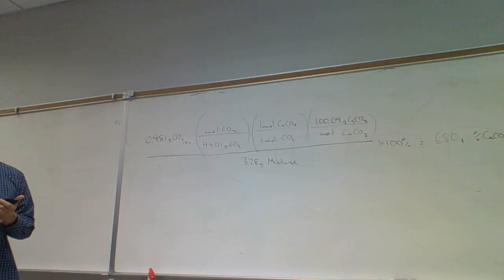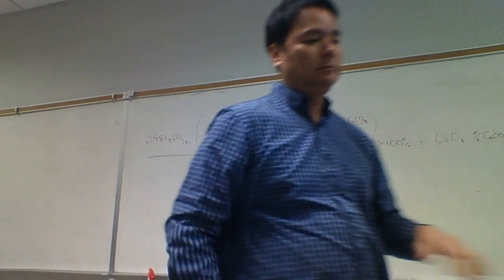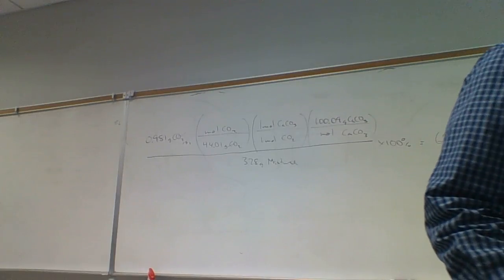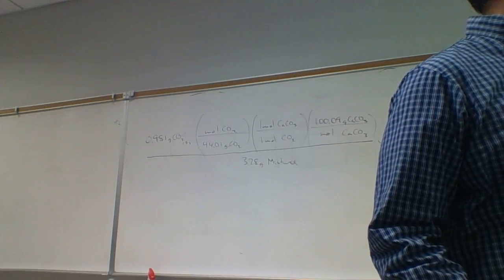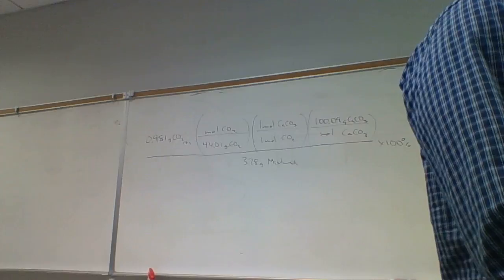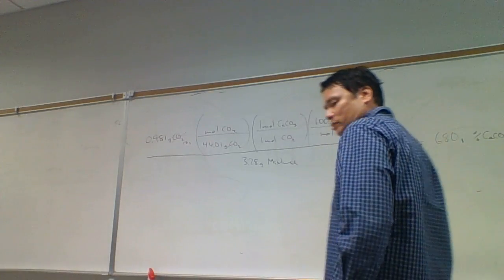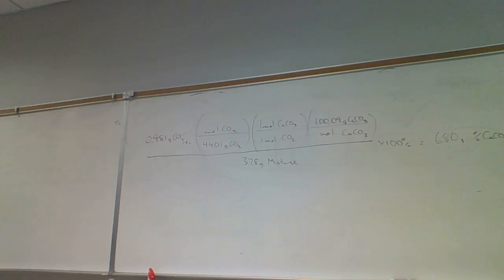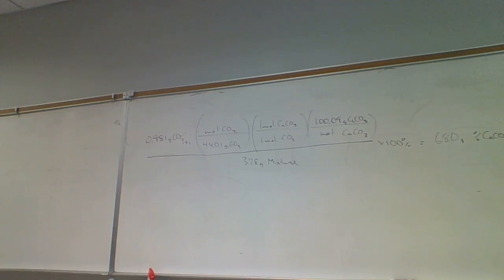Some stoichiometry problems involve solutions, so we need the composition of that solution — molarity. Molarity is most convenient because it goes straight from volume, which is easy to measure, to moles of pure reactant. Definition of molarity is moles per liter. So for 2.92 moles of methanol (CH3OH) in 7.16 liters, molarity is 2.92 divided by 7.16. A millimole per milliliter is the same as a mole per liter.